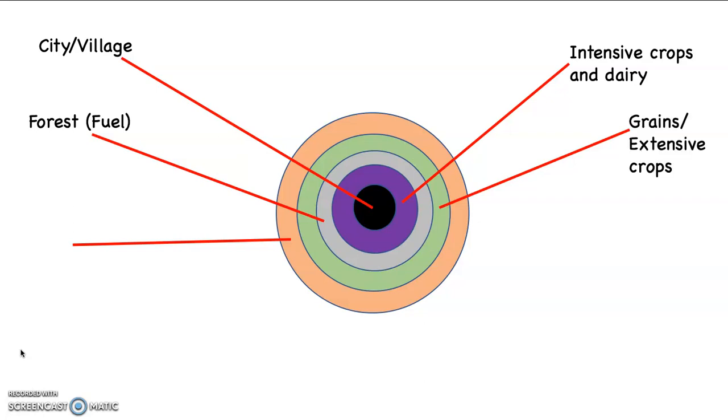Outside of that, on my model in green, would have been the grains and other extensive crops. So this would be like wheat, barley, corn.